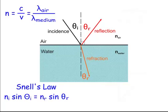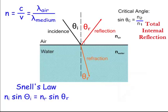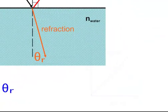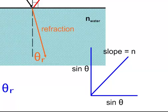This is called Snell's Law. We use the equation n sine of theta equals n sine of theta. There is also a critical angle: the sine of the critical angle equals the ratio of your two indices of refraction. Since sine of theta is always a decimal, put the bigger number on the bottom — if you get a calculator error, just flip them. To find n graphically, graph sine of theta versus sine of theta; the slope will be n, or 1/n if your axes are reversed.